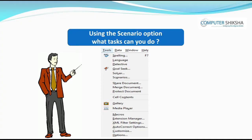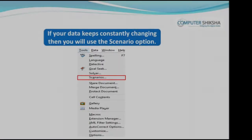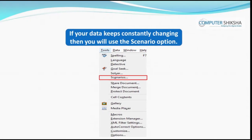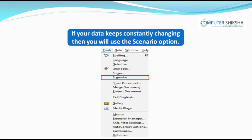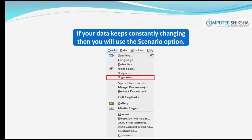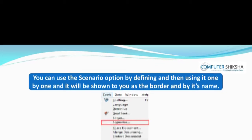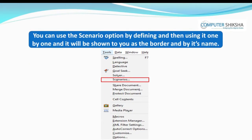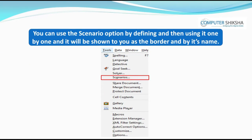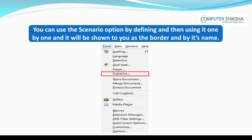Using the Scenario option, what tasks can you do? If your data keeps constantly changing, then you will use the Scenario option. This will help you to see your data as it was and also with the changes made on it. You can use the Scenario option by defining and then using it one by one, and it will be shown to you with a border and by its name.